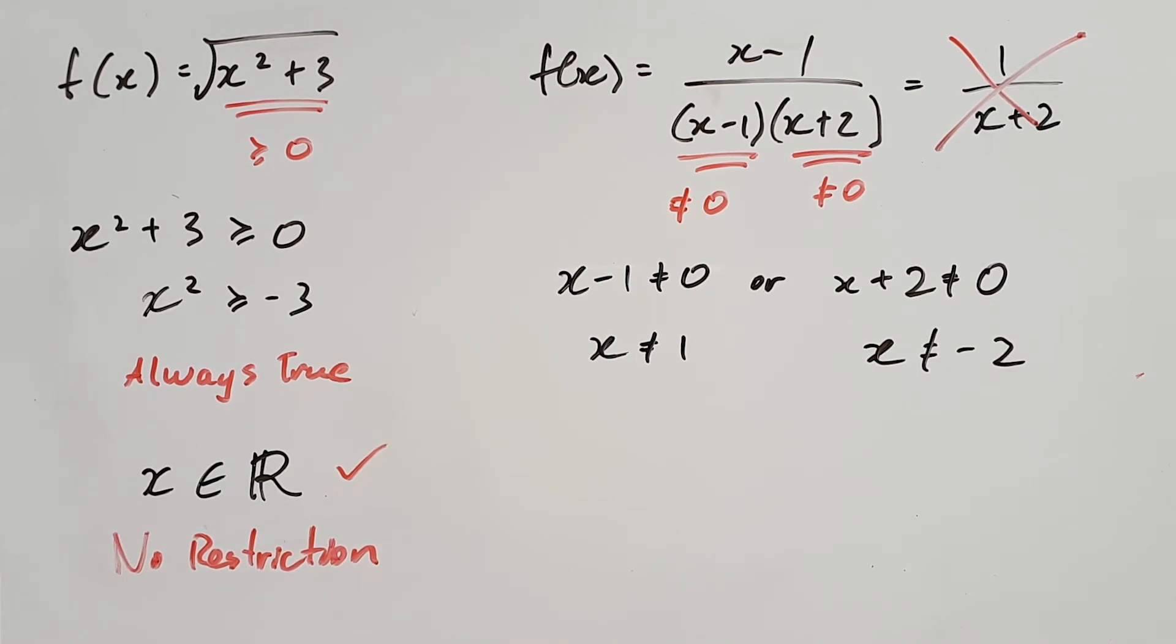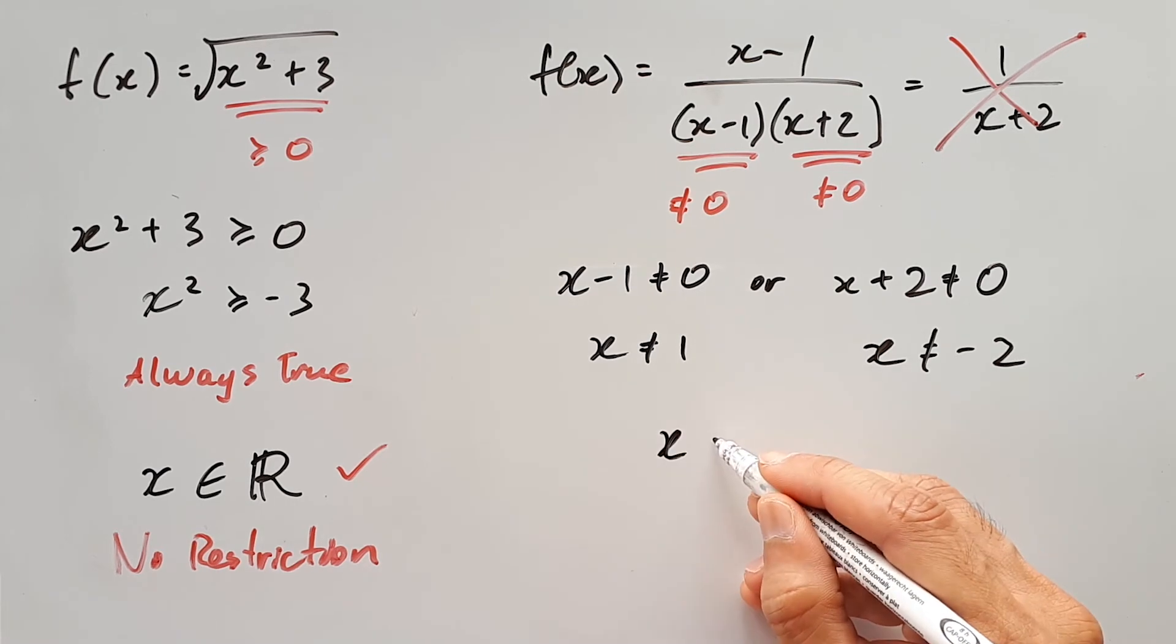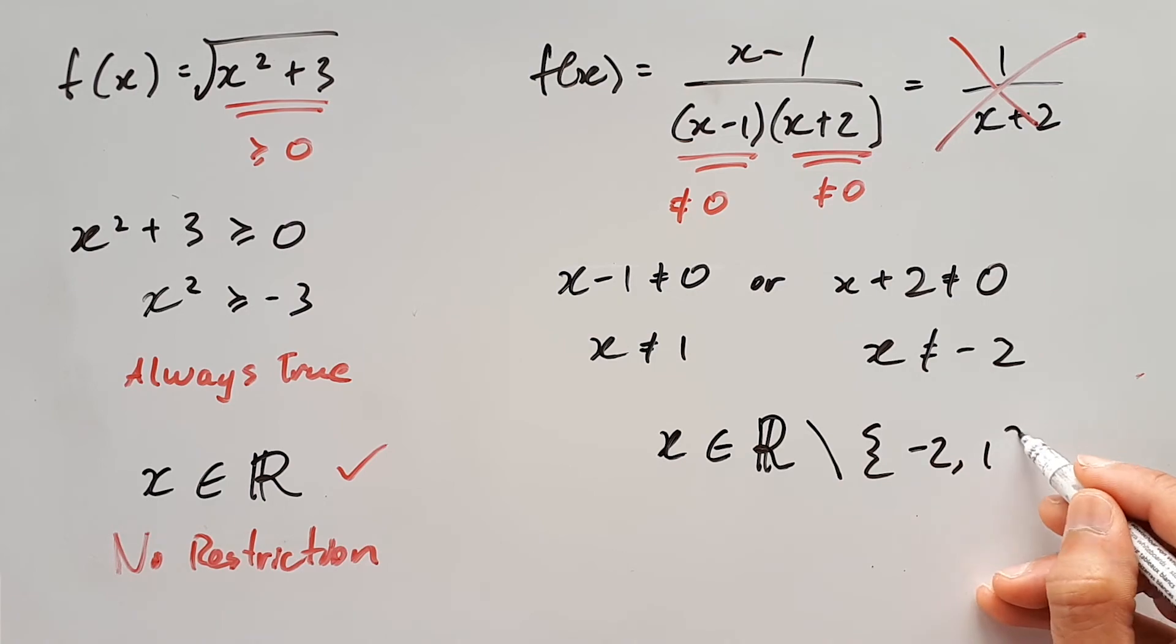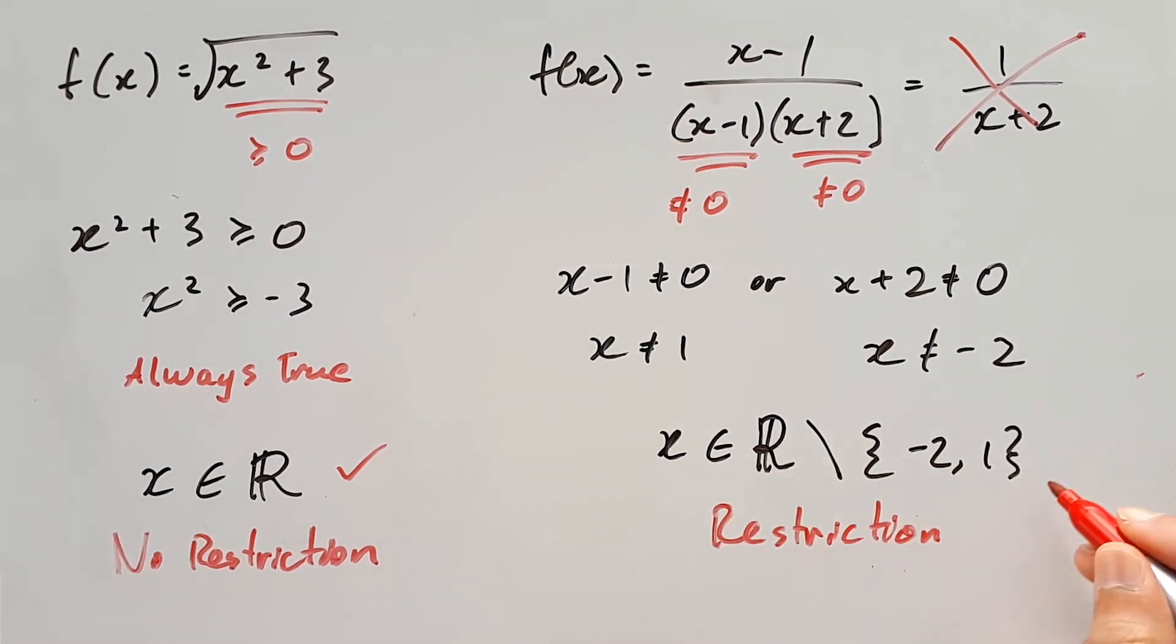You can leave this as the final answer, or you can go further by showing what's included and saying, x is an element of all real numbers, except these two numbers, negative 2 and 1, and that is your complete restriction.